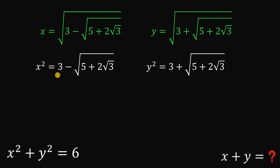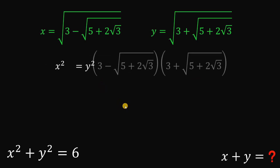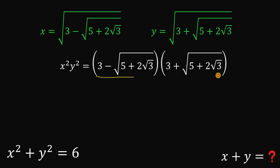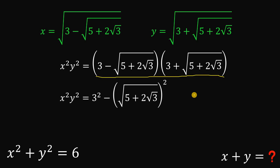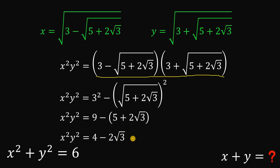Notice we have 3, and the same term with a minus and a plus — this is a difference of squares form. So let's multiply x squared and y squared. If we simplify the right-hand side, this is just the square of the first term minus the square of the last term. 3 squared is 9, and square root of pi plus 2 times square root of 3 squared is pi plus 2 times square root of 3. Simplifying this, we have 4 minus 2 times square root of 3.